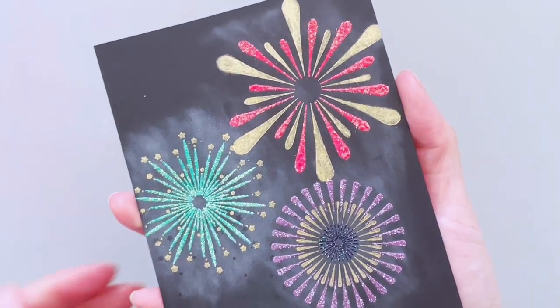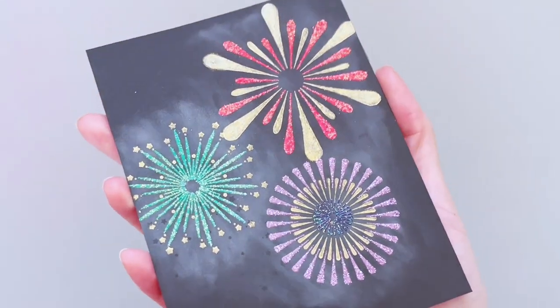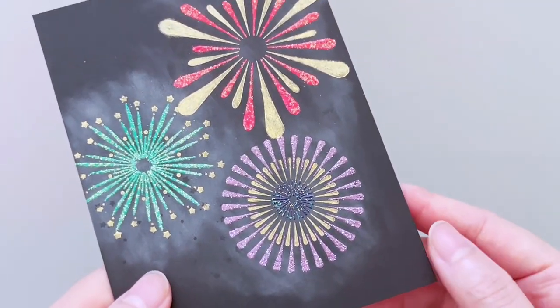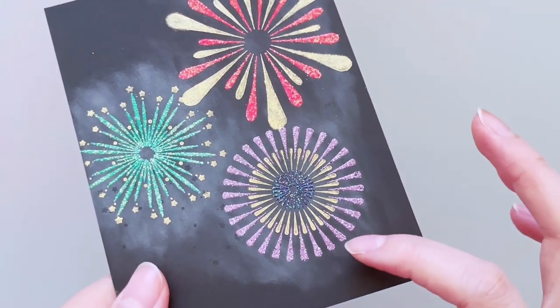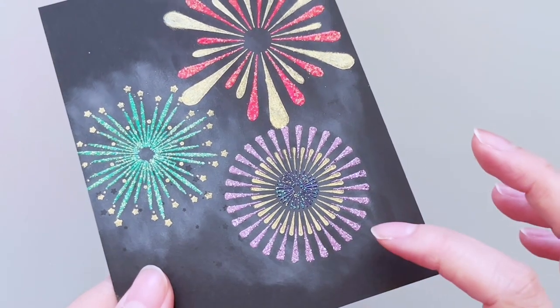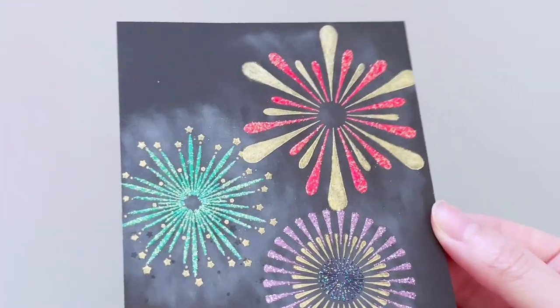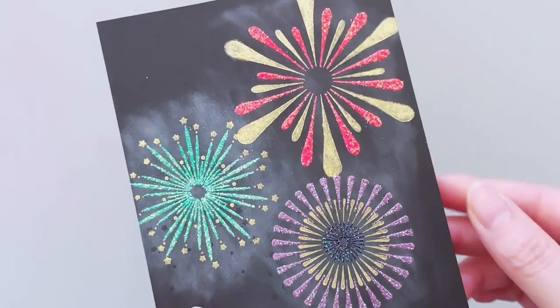So this is what the card panel looks like after the stamping and heat embossing. You do see traces of the anti-static powder that I used in the beginning of the video. It just looks like a white dusty area, but it's actually really simple to rub it off just with a piece of tissue.